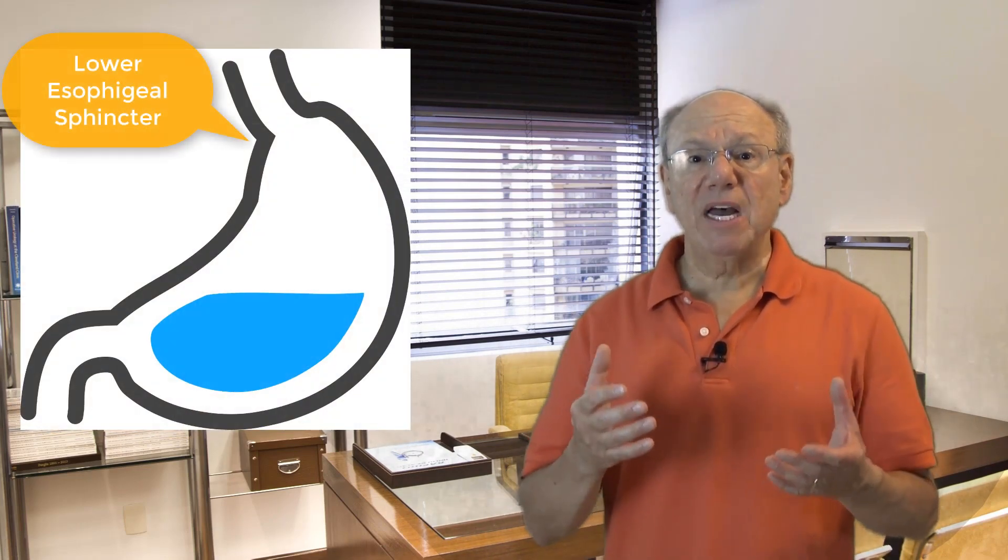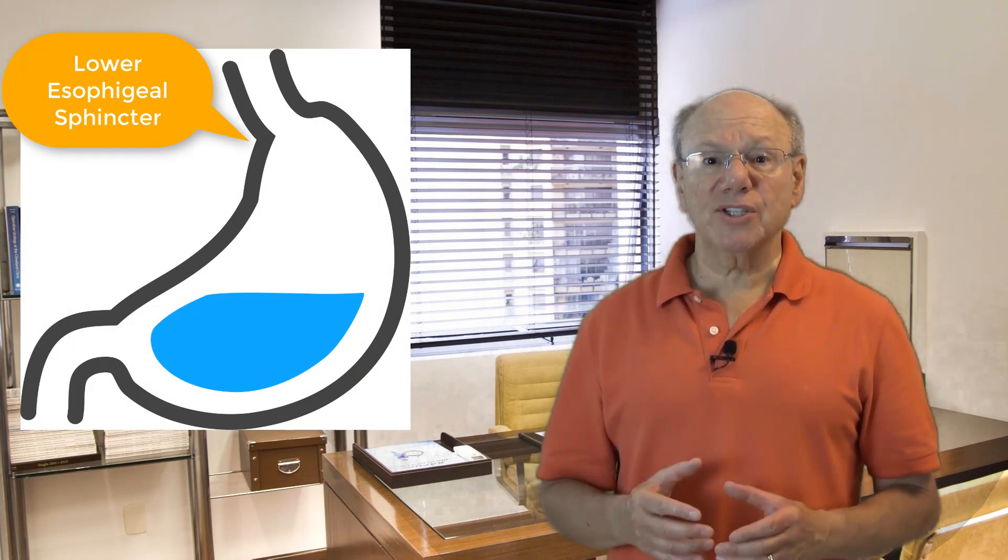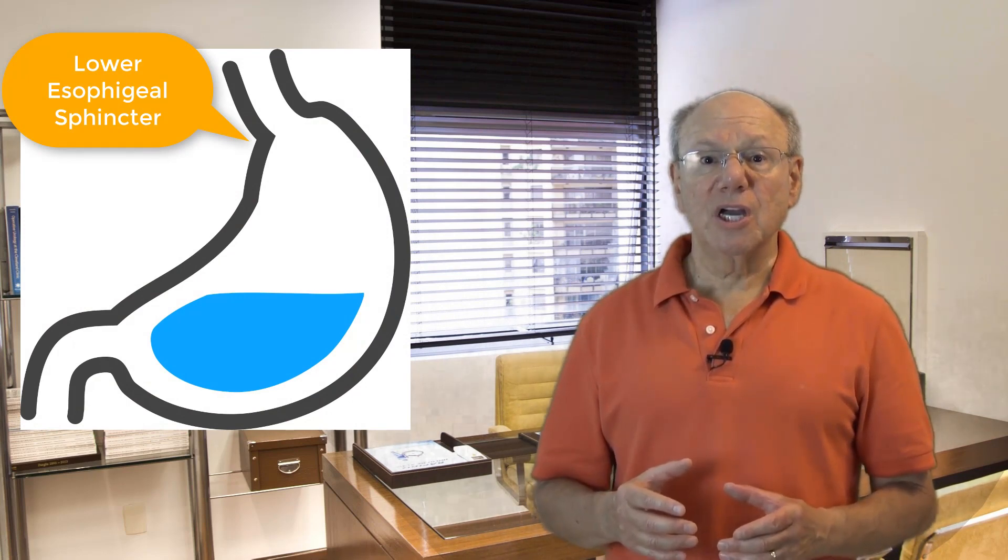During digestion, food enters the stomach and is prevented from refluxing up by a muscle called the lower esophageal sphincter. The lower esophageal sphincter works like a pressure switch. It opens in response to the pressure of food coming down.